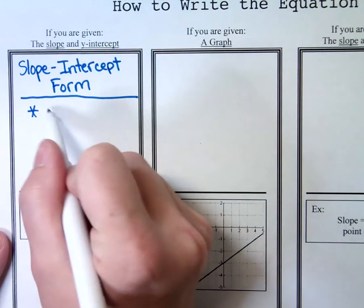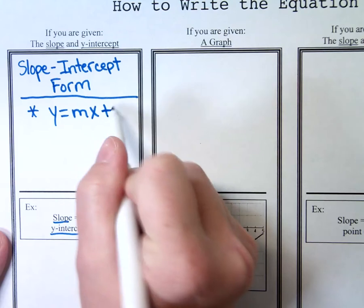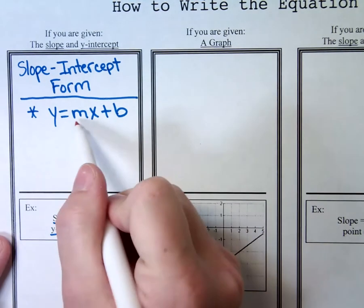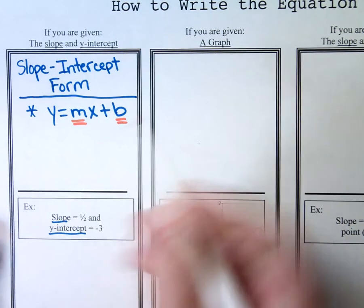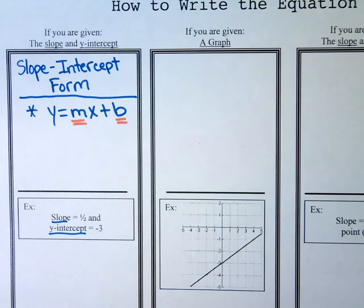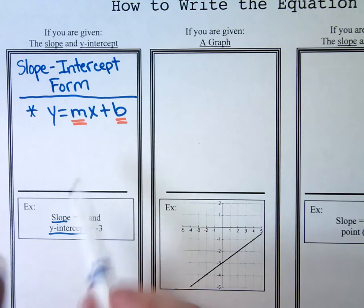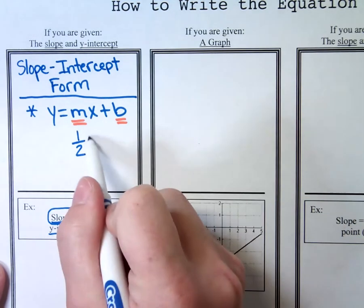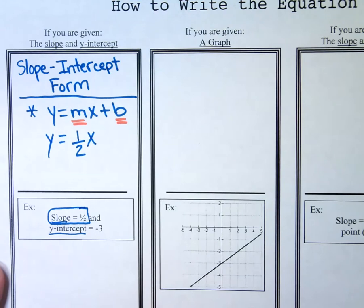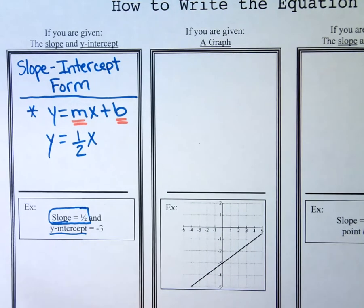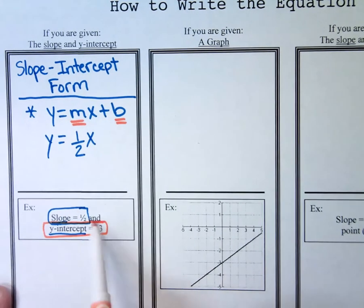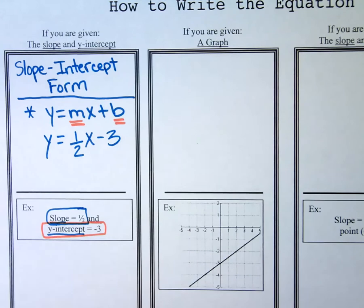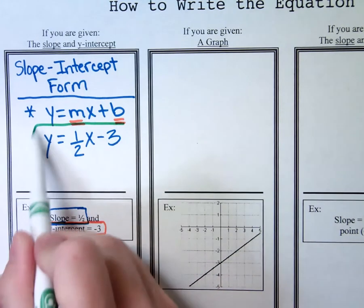Slope-intercept form is y equals mx plus b. The only two things I need to know are m, the slope, and b, the y-intercept. They said the slope was one half, so I put one half where the m is. I recopy the x, the equals, and the y. The y-intercept is negative three, so I put minus three where the b is. And that's it — I have the equation of my line in slope-intercept form.